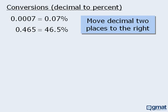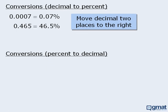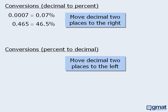When it comes to converting a percent to a decimal, the rule is to move the decimal point two spaces to the left. So to convert 9.63% to a decimal, we move the decimal point two spaces to the left to get 0.0963. Applying the same rule, 125% converts to the decimal 1.25.